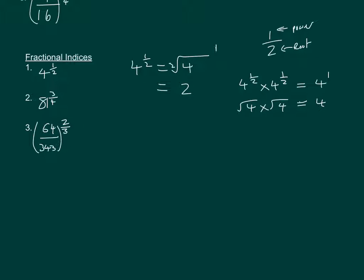If we look at 81 to the power of 3 over 4: the bottom is a 4, so we're doing the fourth root, and then we're cubing it. It doesn't matter if we cube 81 first and then take the fourth root, or take the fourth root first and then cube — but it's much easier to do the root first to keep the numbers manageable, since 81 to the power of 3 would be a very big number. So the fourth root of 81 is 3, and then we cube it to get 27.